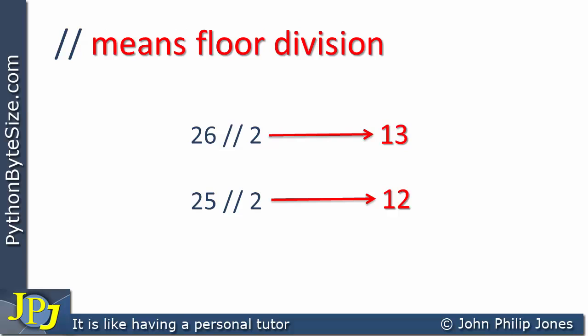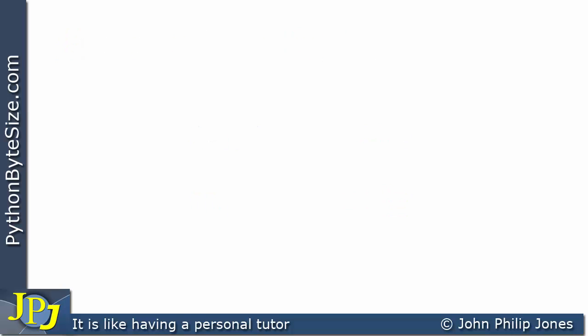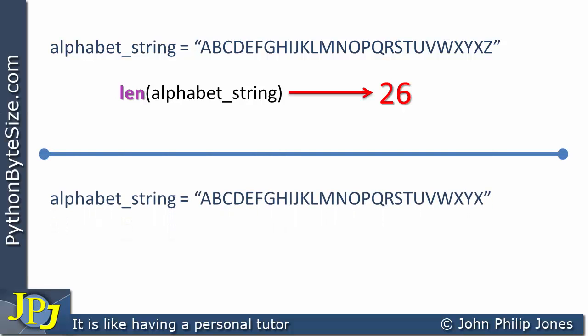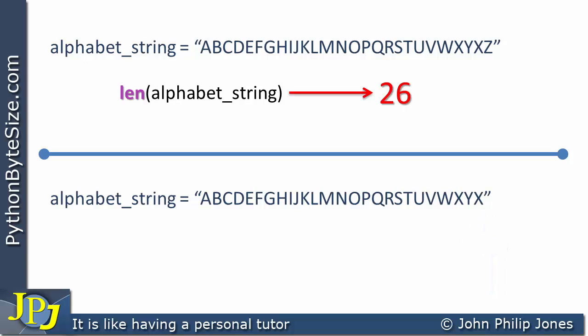Let's remind ourselves of the length function. Here we have an alphabet string going from A to Z, including all uppercase letters in the English alphabet. Using the `len()` function tells us how many characters are in the string and returns 26. In another example, the Z has been removed, so this isn't the full uppercase collection — it's missing Z. Consequently the length of that string is 25, not 26.